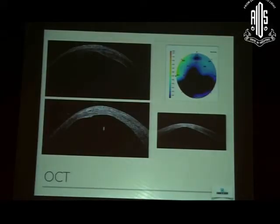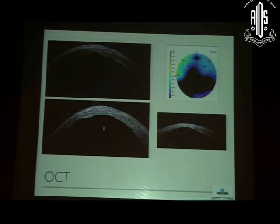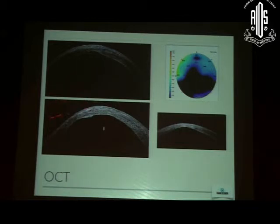One of the most important tools that any lamellar keratoplasty surgeon must have is access to an anterior segment OCT. It helps you in many ways: it helps you assess the extent of the pathology, gives you accurate assessment of the thinning, and tells you how thick the actual stroma is — sometimes the epithelium may be thickened in certain areas and you may think the cornea is thick but the stroma is actually very thin. You'll also be able to identify Descemet's membrane irregularities or even a small detachment of Descemet's membrane due to previous hydrops. Look for these irregularities, because if you have something like this then you don't want to do a big bubble technique.